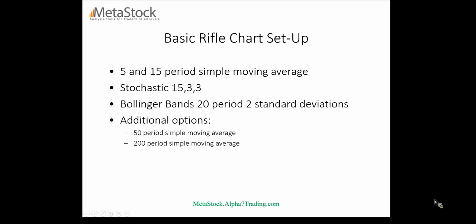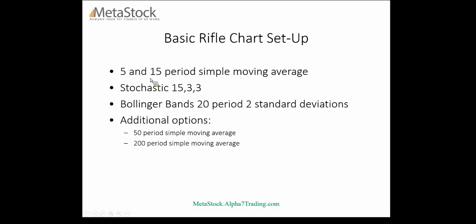On Metastock Zenith, here's how you set up the basic components: five and fifteen period simple moving averages, stochastics at 15-3-3, and Bollinger Bands at 20 period with two standard deviations. For wider time frame charts you can add a 50 and 200 period moving average. On smaller time frames — the one and five minute — I pretty much stick to a 200 period moving average, or else you may not be near that 50 period moving average, and you can also scrunch your chart with too many lines.